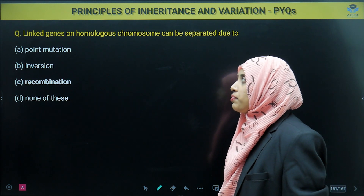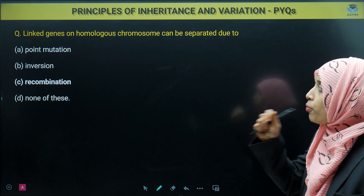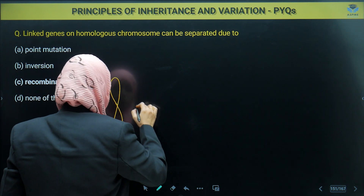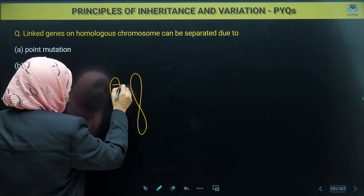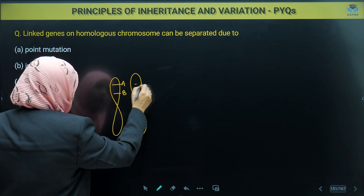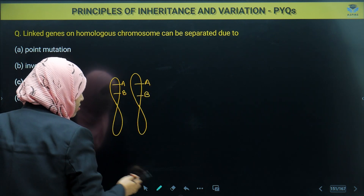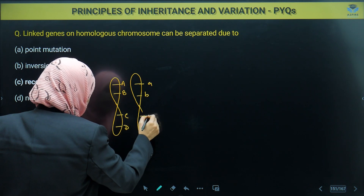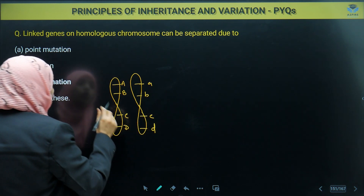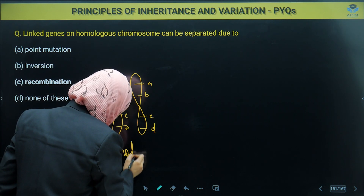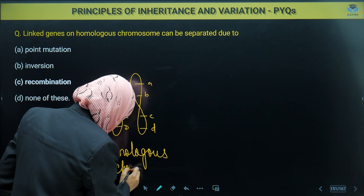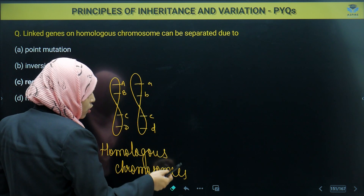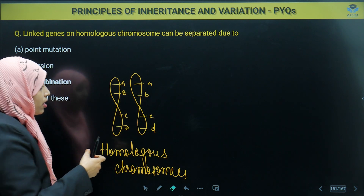Next question: linked genes. Linked genes are located on homologous chromosomes. If one chromosome has genes A, B and the homologous chromosome also has A, B — all genes on homologous chromosomes are linked genes. So linked genes on homologous chromosomes can be separated. How? Due to either point mutation, inversion, or recombination, or none of these.